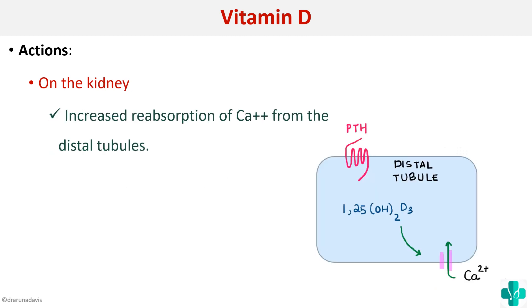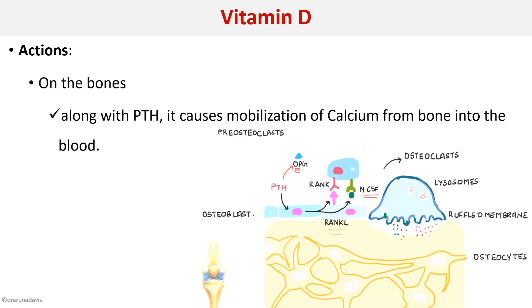On the kidney, vitamin D increases reabsorption of calcium from the distal tubule. On the bones, along with parathormone, vitamin D causes activation of osteoclasts so that bone resorption occurs and there will be increased calcium in the bloodstream.